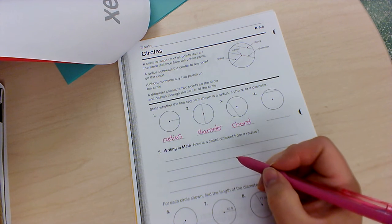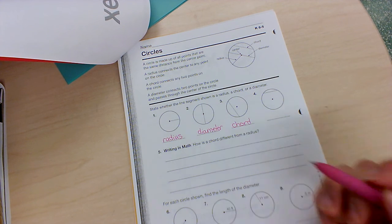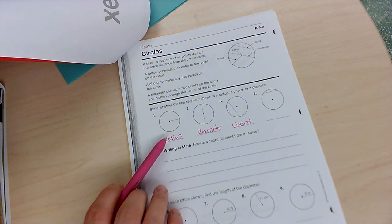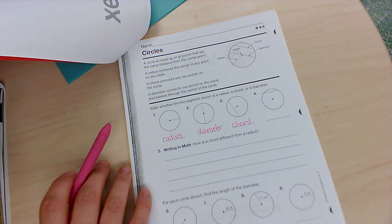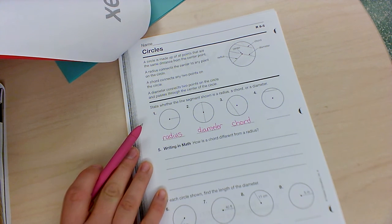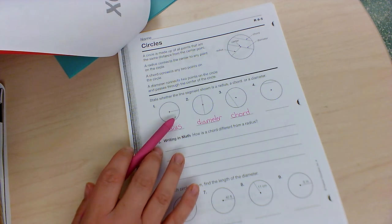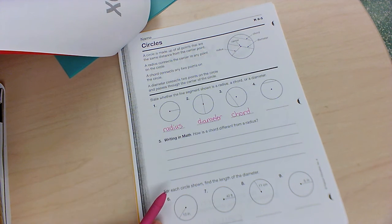Number five, how is a chord different than a radius? So here's a radius, here's a chord. What is different about them? Look towards the center of the circle to help you.